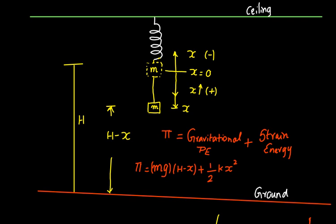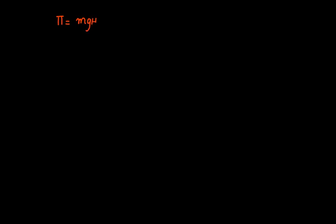Expanding the equation, the total potential energy pi equals mg(h minus x) plus one-half k x squared, which rearranges to: pi equals one-half k x squared minus mgx plus mgh. Here k is the stiffness of the spring — stiffness is load divided by deflection, meaning the amount of force required to stretch the spring by a certain amount x.